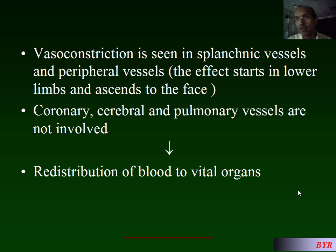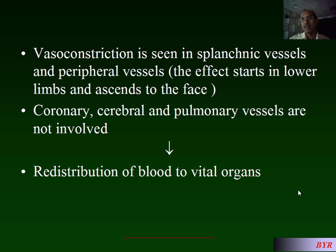The reason some vessels constrict and others do not is because of receptors. The sympathetic system acts on alpha and beta receptors. These receptors are not uniformly distributed throughout the blood vessels. So depending upon their distribution and stimulation, the effects will vary — explaining why some vessels constrict and others remain unaffected or dilate.